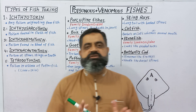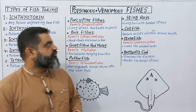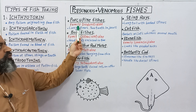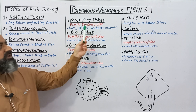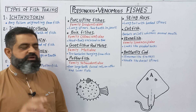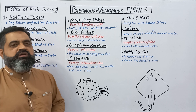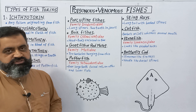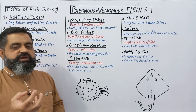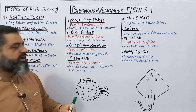Now we are going to discuss some examples of poisonous and venomous fishes. Looking at poisonous fishes, number one is porcupine fish. Porcupine fishes belong to family Diodontidae. These fishes can be recognized by long spines present on the body and two teeth present in the jaws. By eating this fish, you can get the poison present in its body, which can be toxic for your body or another animal.